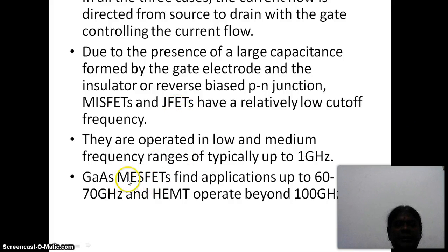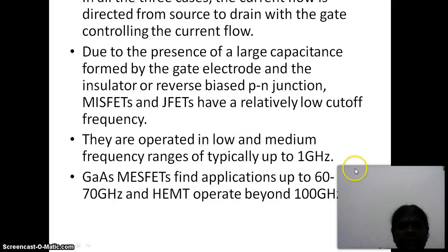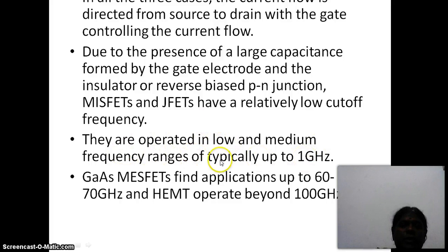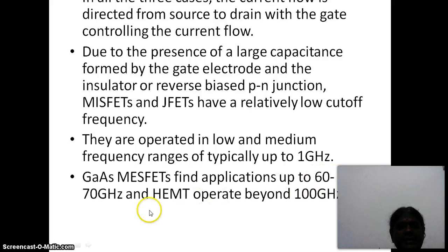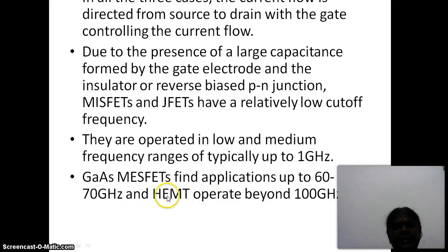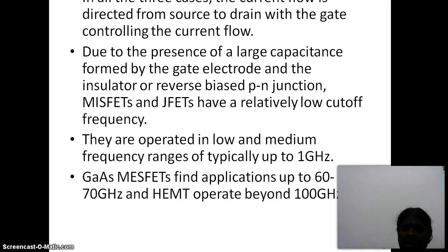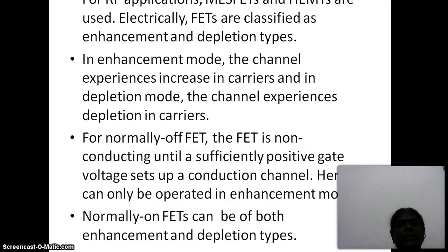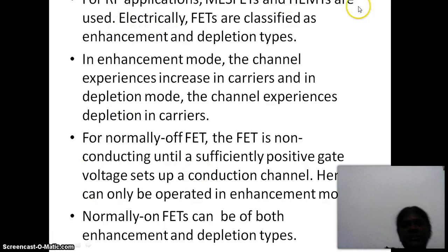Whereas metal semiconductor FETs — MESFETs — are used for very high frequency applications. For very high frequency applications such as millimeter wave, around 60 to 70 GHz, and HEMT operates beyond 100 GHz, HEMT transistors are used — high electron mobility transistors. For RF applications, MESFETs and HEMTs are used.